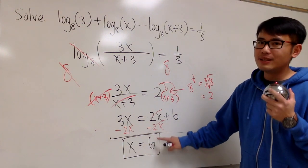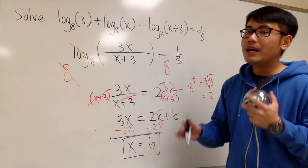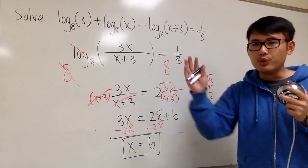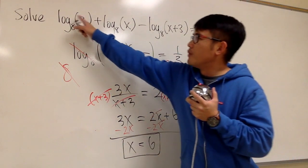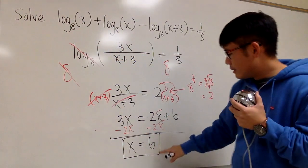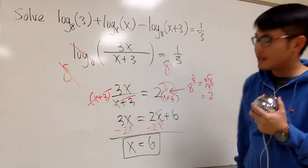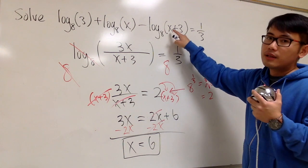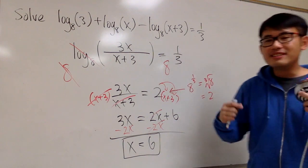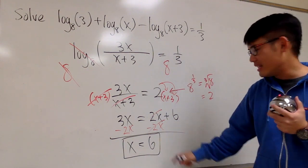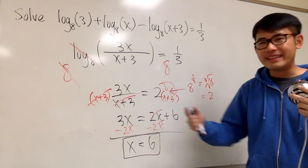You should always plug the number back into the very original equation for all the x values. You have to be sure that inside the logarithms you cannot end up with a negative value. When you plug in 6, the first part, x, is positive — that's good. Plug in 6 into the next term: log base 8 of 6 — positive inside. Plug in 6 into the last term: 6 plus 3 is 9, positive 9 — that's also good. This is the quick, legit check. Everything inside gives you positive, so you know for sure this is the correct answer.